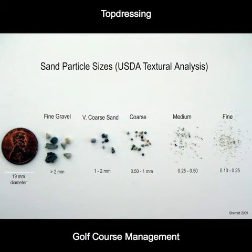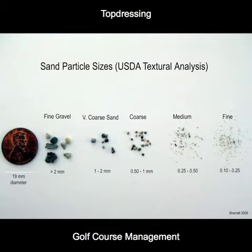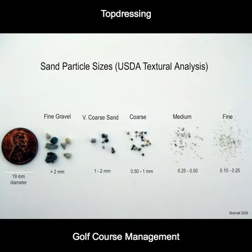Sands are classified by the size of their particles. Fine gravel contains granular particles greater than 2 millimeters in diameter, while fine sands have much smaller diameters of a tenth to a quarter millimeter. As a general rule of thumb, medium coarse uniform sands are used on native soils, with slightly smaller particles introduced on sand root zones. Finer particles of sand are used on sand root zones to ensure surface stability. Basically, the coarser the sand, the less stable or firm it is.